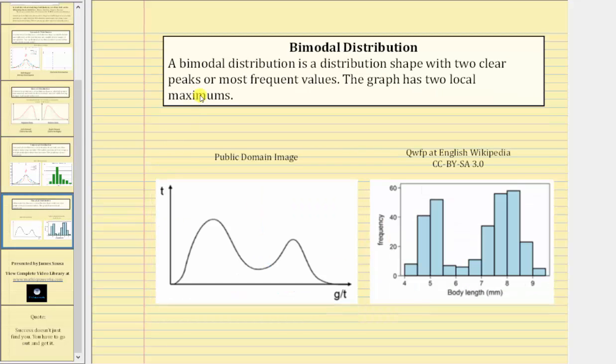A bimodal distribution is a distribution shaped with two clear peaks or most frequent values. The graph has two local maximums. And here we have two examples of bimodal distributions that have two clear peaks. I hope you found this helpful.